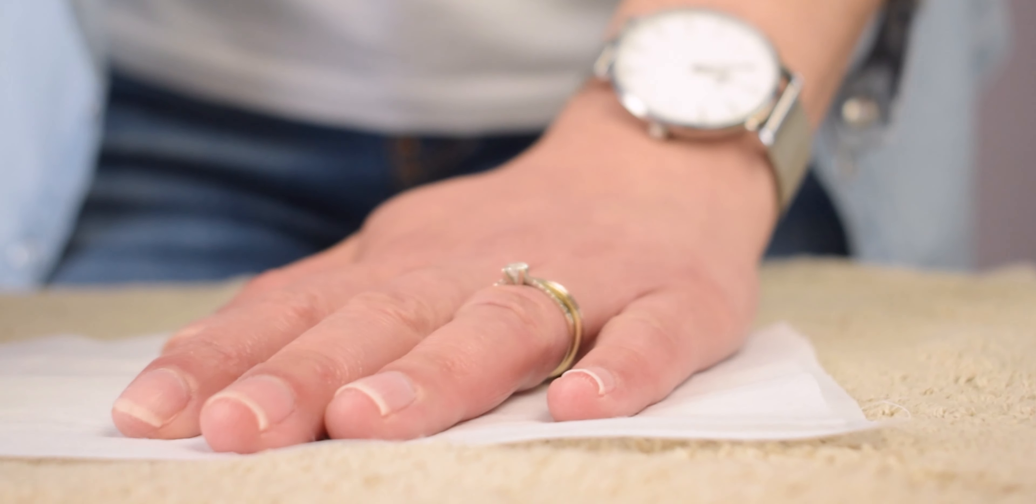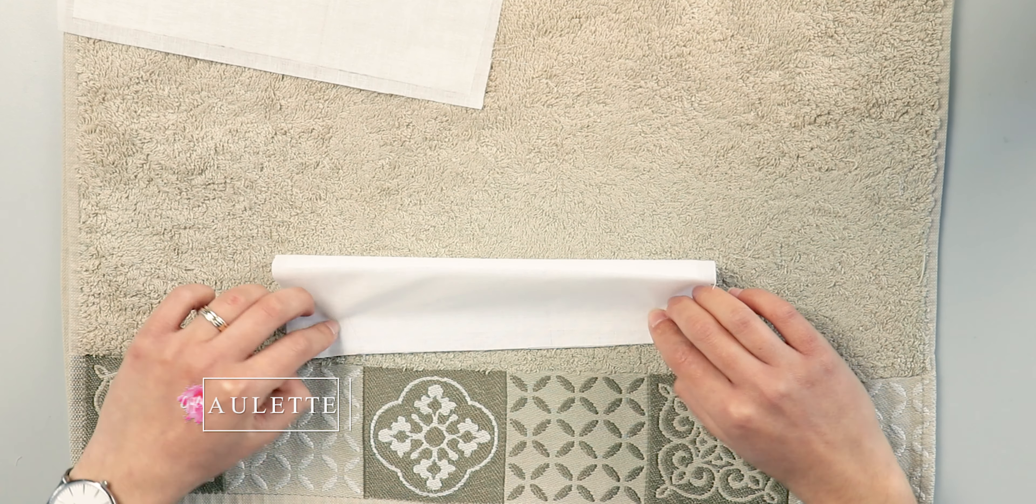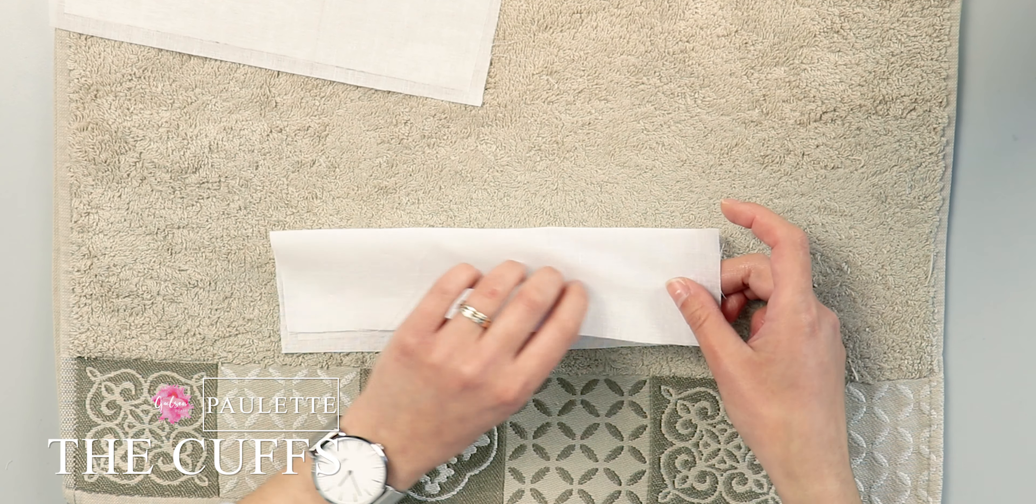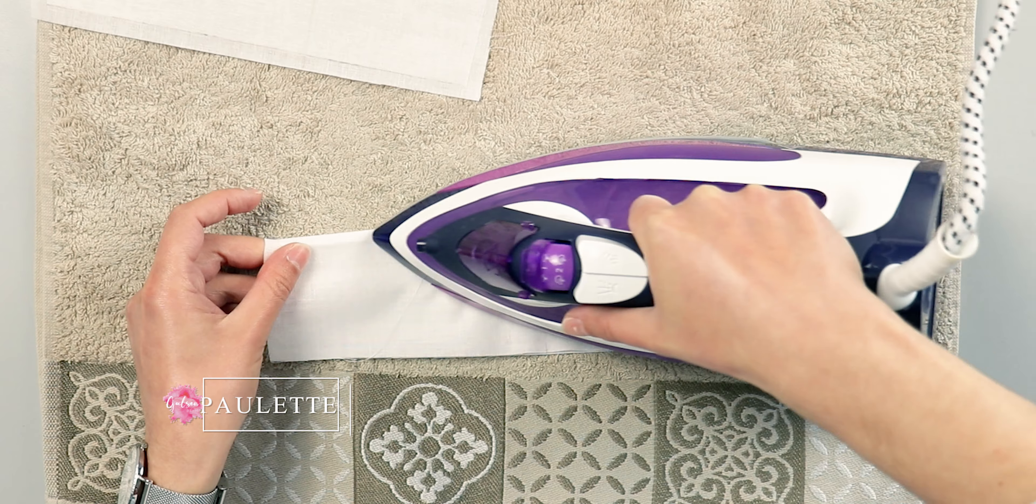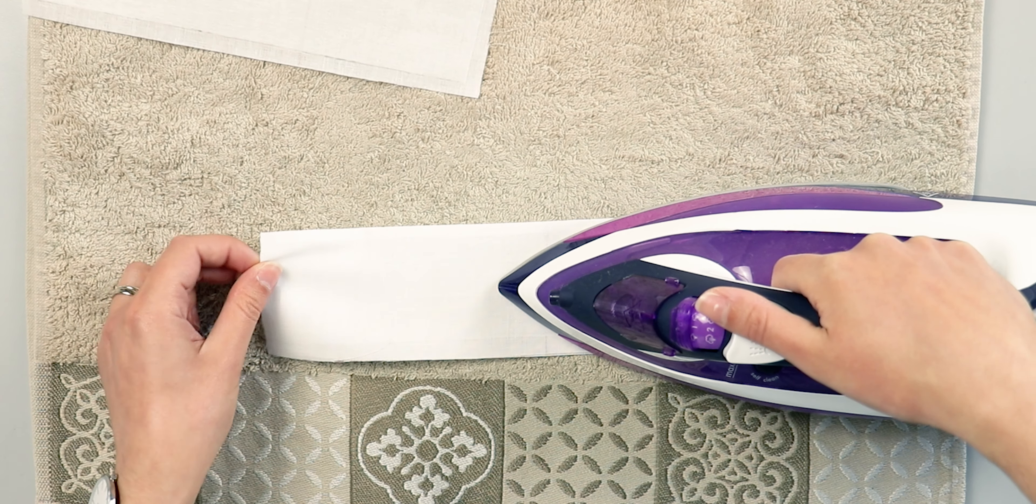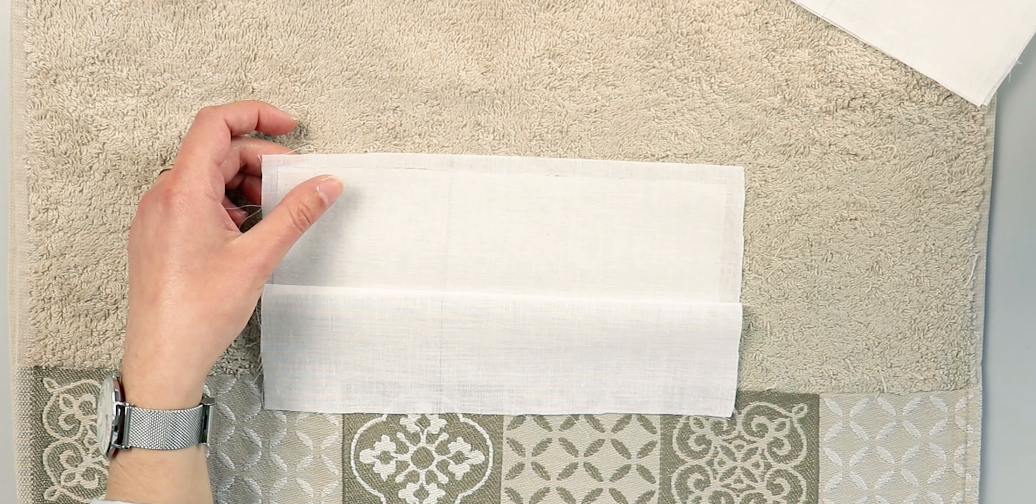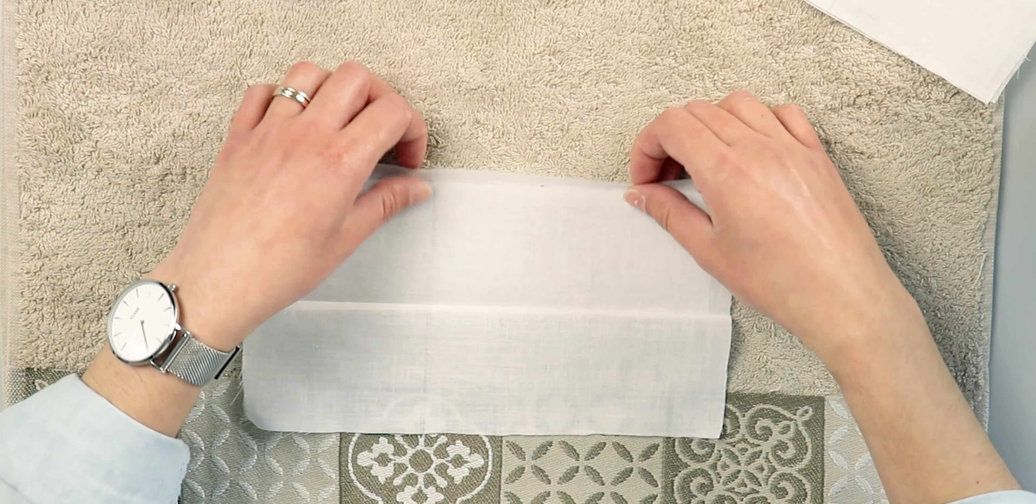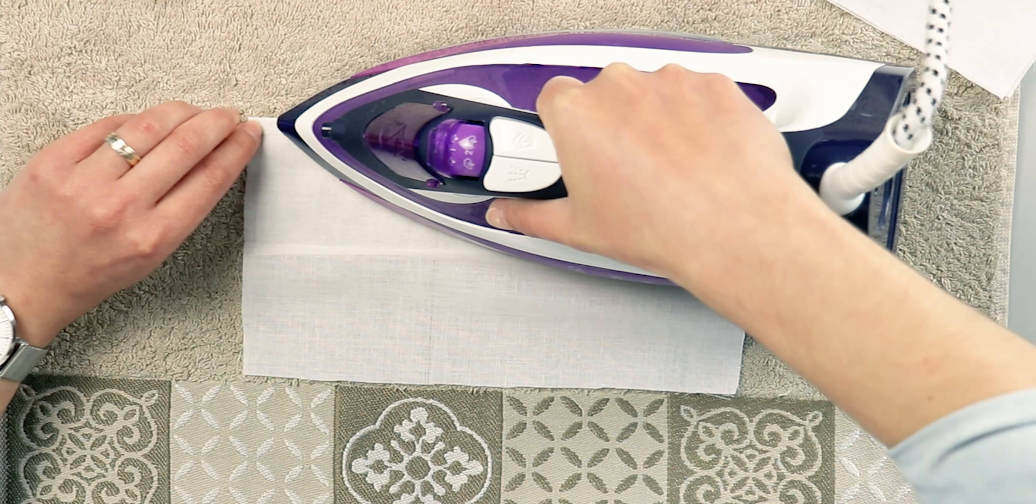I already ironed the interfacing to the cuff pieces in advance. Fold the cuff in half lengthwise with wrong sides facing each other and iron to create a fold. Open it back out. We need to take the edge with the marking threads and fold it over by 1cm towards the wrong end and then iron.